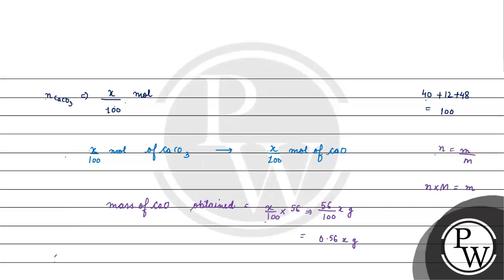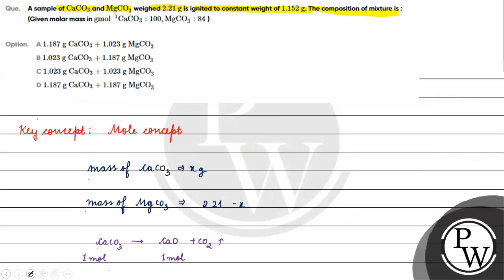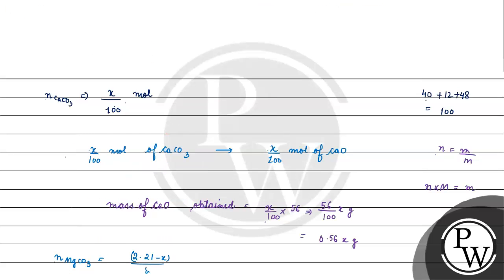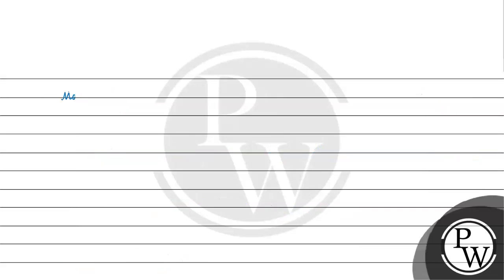अब magnesium carbonate के number of moles की बात करें तो: moles = mass/molar mass = (2.21 - x)/84, क्योंकि molar mass of MgCO₃ = 84। जब magnesium carbonate को heat किया तो एक mole MgCO₃ से एक mole MgO और एक mole CO₂ बना। तो (2.21 - x)/84 moles of MgCO₃ से (2.21 - x)/84 moles of MgO मिलेगा।